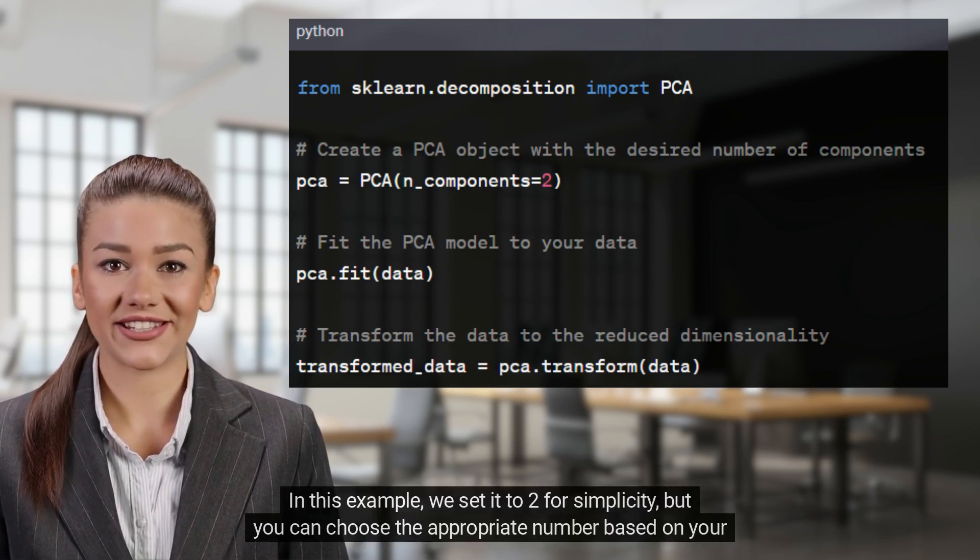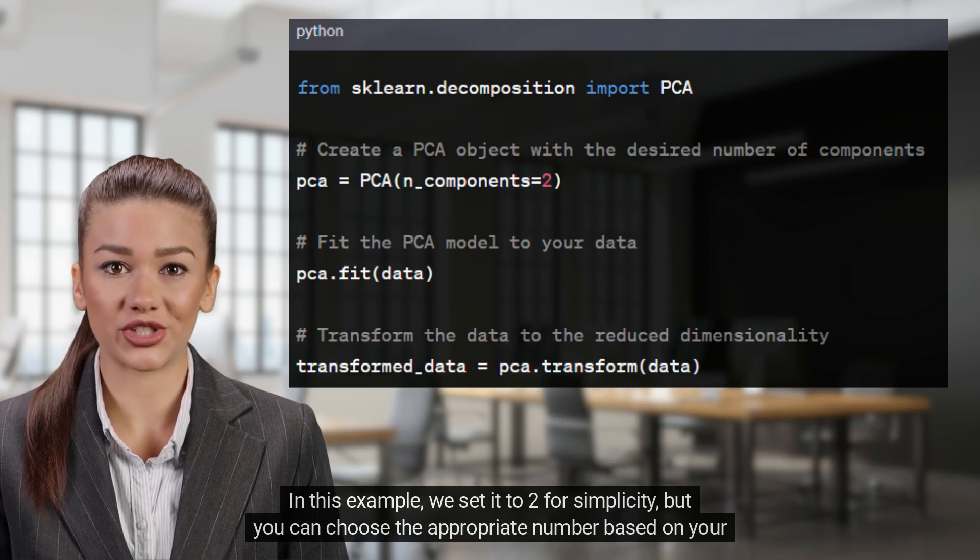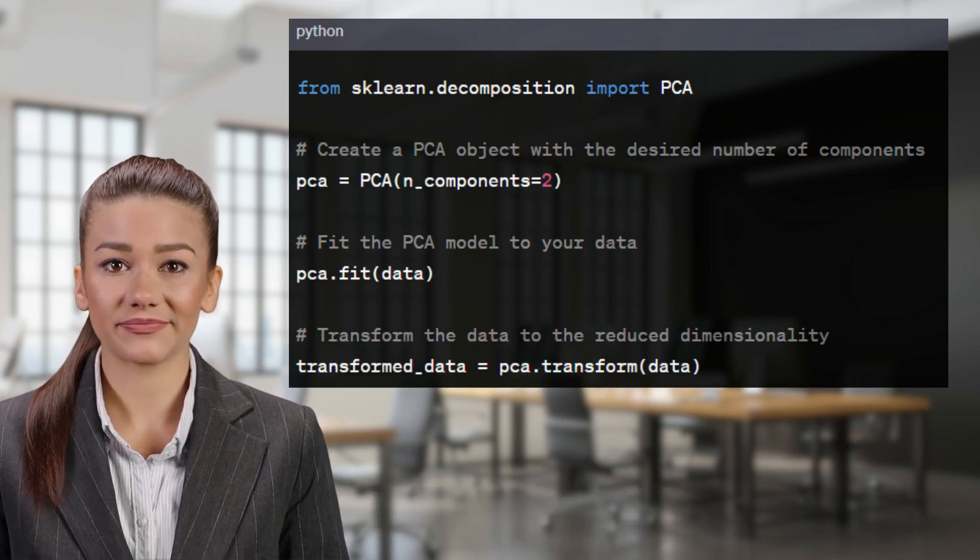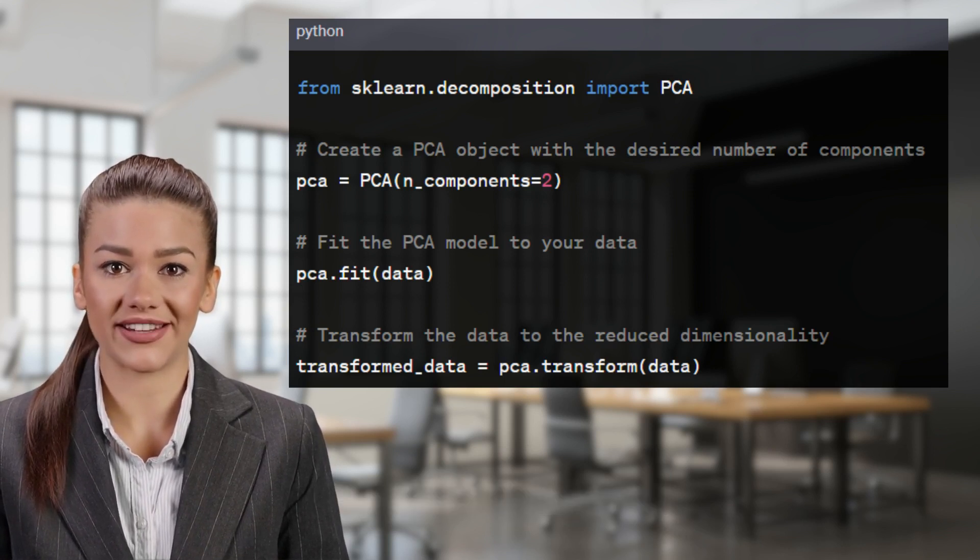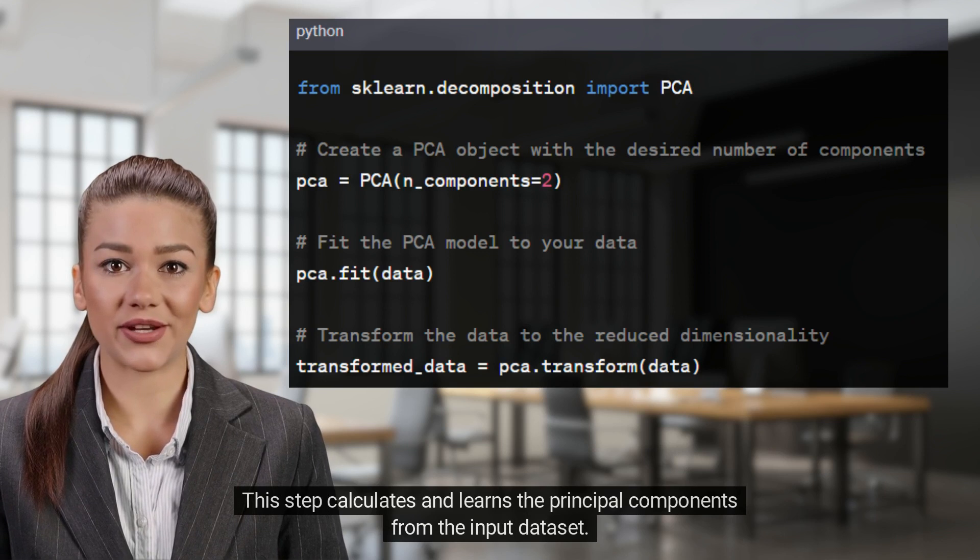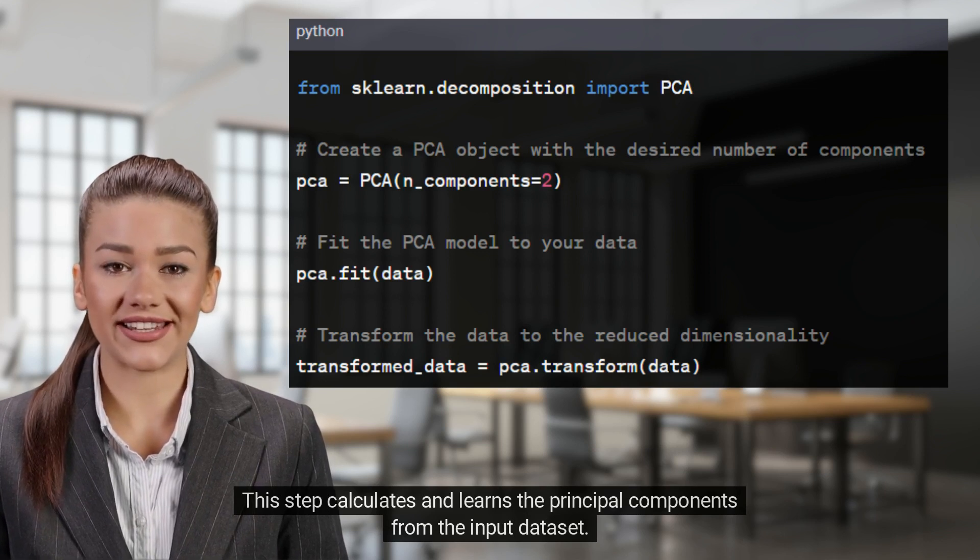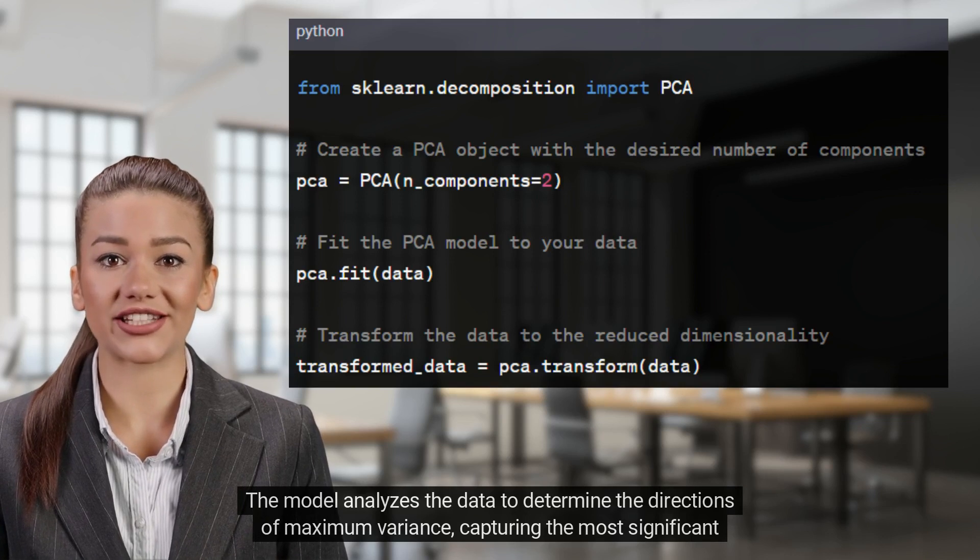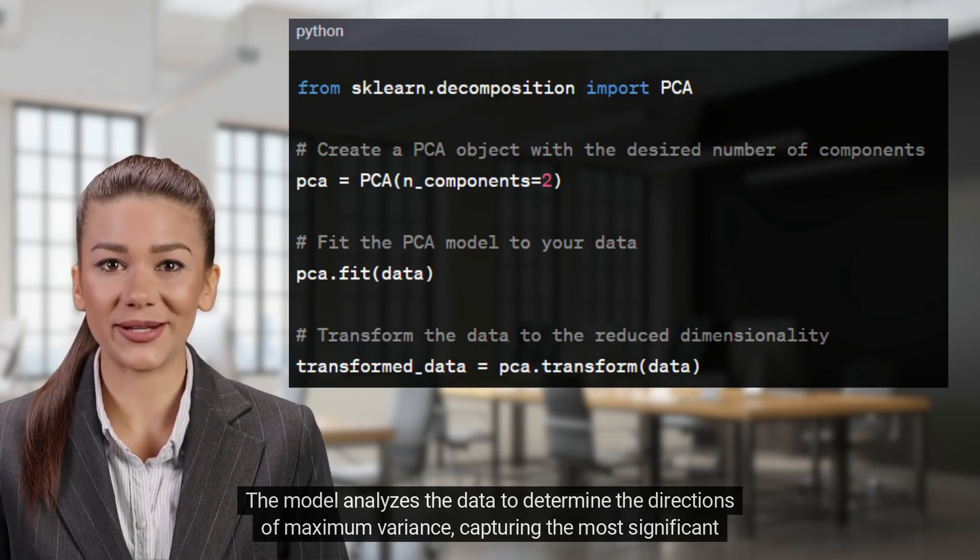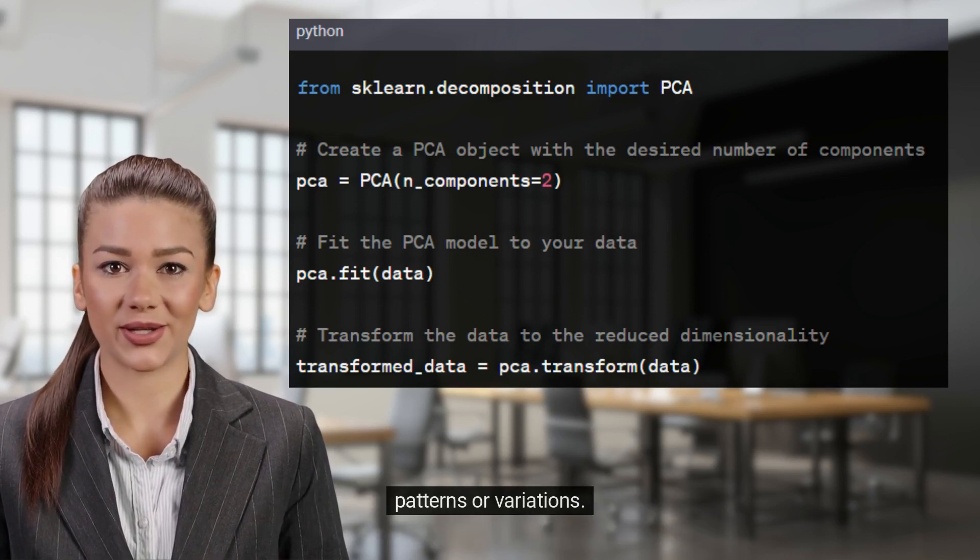In this example, we set it to 2 for simplicity, but you can choose the appropriate number based on your specific analysis needs. Next, we fit the PCA model to our data. This step calculates and learns the principal components from the input dataset. The model analyzes the data to determine the directions of maximum variance, capturing the most significant patterns or variations.